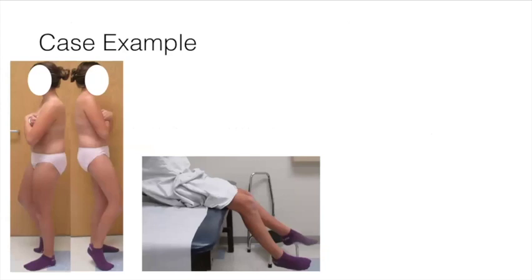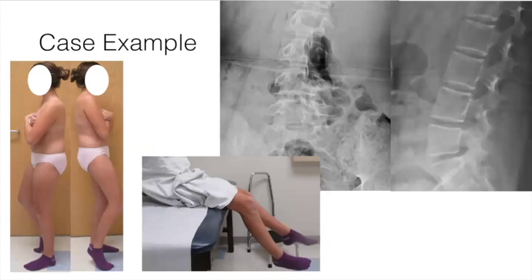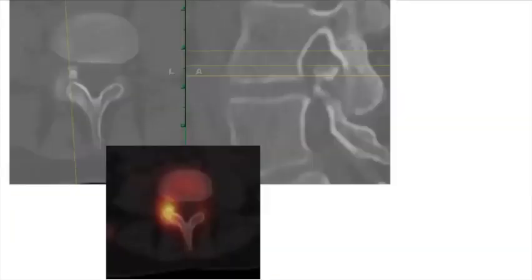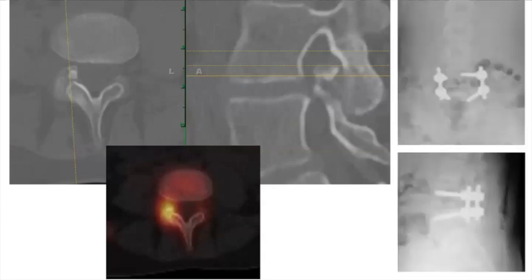Here's a case example: a 13-year-old girl with very tight hamstrings on the right side. You might initially think of isthmic spondylolisthesis, but x-rays were relatively normal. CT with thin cuts and PET-CT showed increased uptake in the superior articular process — this was an osteoid osteoma. We removed the entire facet joint because accessing it alone would destabilize that side, so we performed a posterior instrumented fusion.